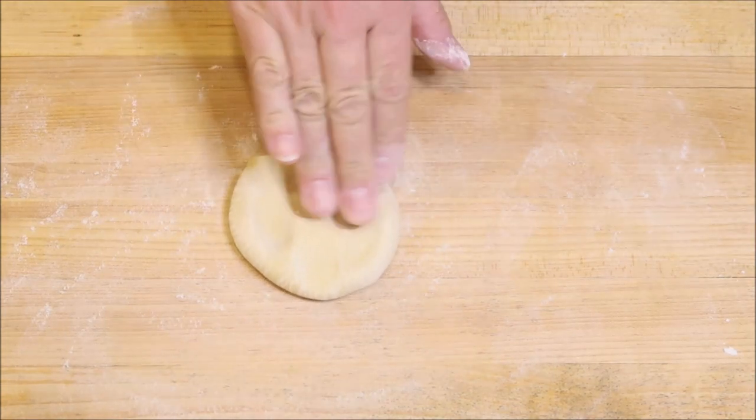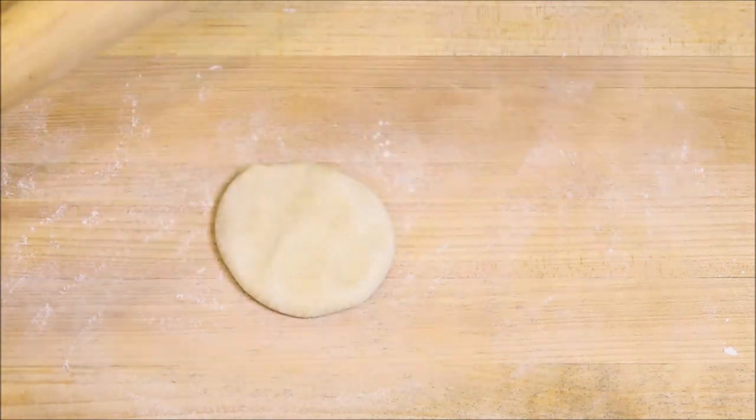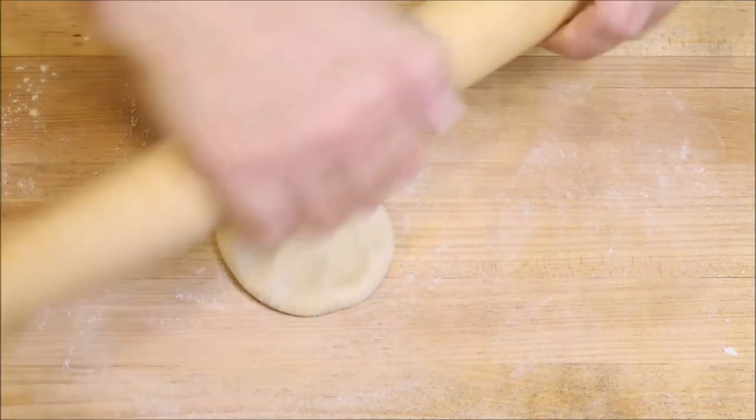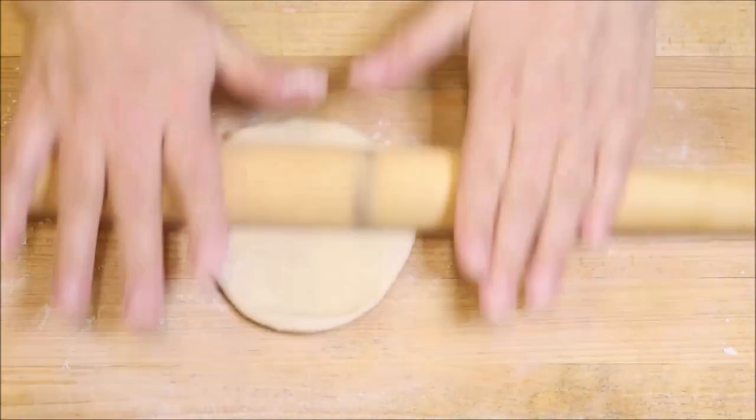Our dough balls are ready to be rolled out. We're going to put a little flour on our work surface, grab one of our balls, push it down a little. Get the rolling pin, put a little flour on here and rub it on, and just roll it out.